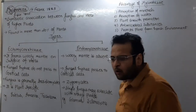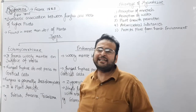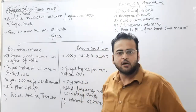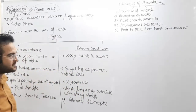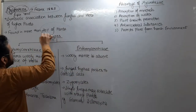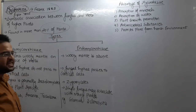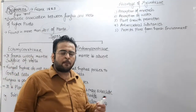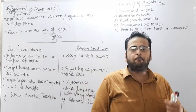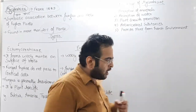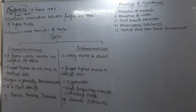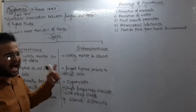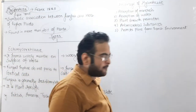Mycorrhiza is found in more than 20% of plants, of approximately 95% of plant families. 20% se zyada plants mein yeh paya jata hai aur plant ki development mein iska bahut bada role hai. Aب is ki types ko dekhte hain — we have two types of mycorrhiza: ectomycorrhiza and endomycorrhiza.